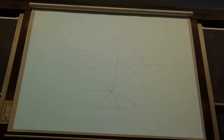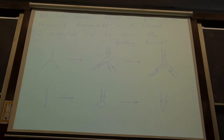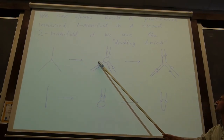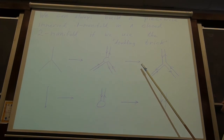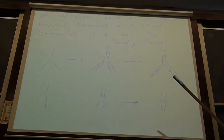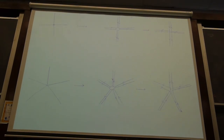Let's look at 1-manifolds immersed in a 2-manifold — one dimension lower than the surface subgroup theorem. Here I have one-dimensional geodesic segments mapped into a surface. We can always put these together to form an immersed 1-manifold by taking two copies of each of these segments, oriented in opposite directions, and always connecting one coming in to one going out. Then we form the closed piecewise geodesic immersed 1-manifold.